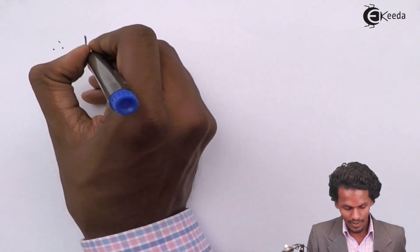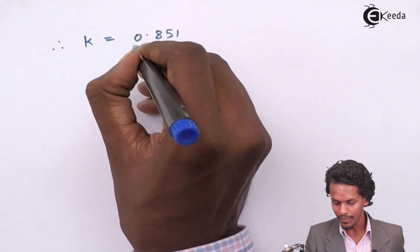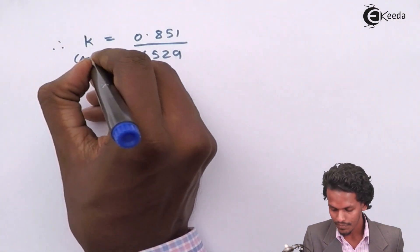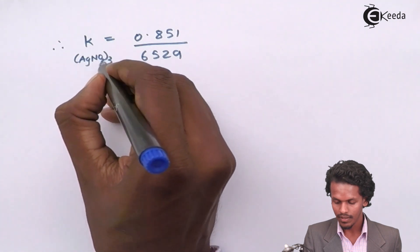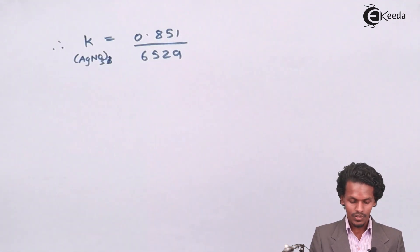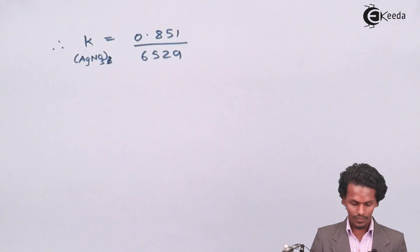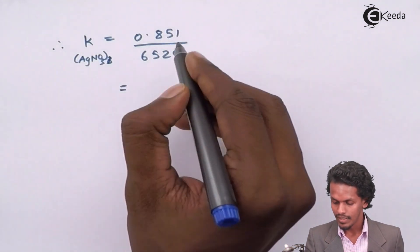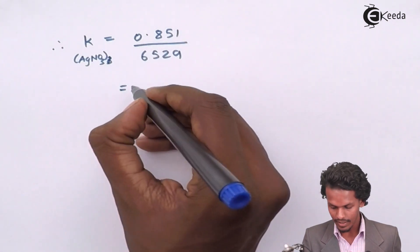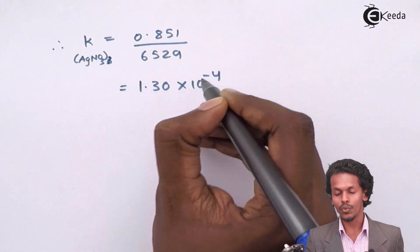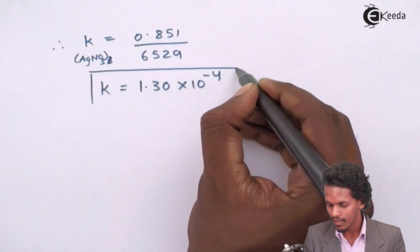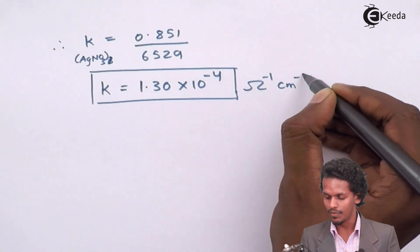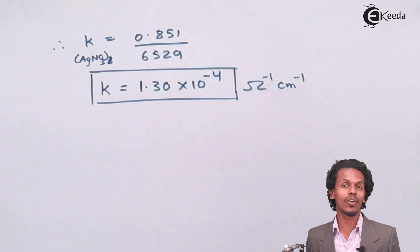Therefore, K for AgNO3 equals 0.851 divided by 6529, which gives a value of 1.30 × 10⁻⁴. The unit of this conductivity is ohm inverse centimeter inverse. With this value, we can now estimate the molar conductivity.